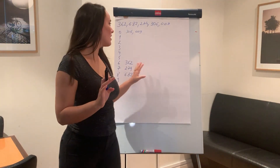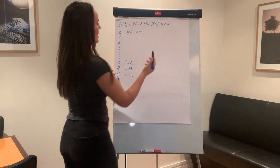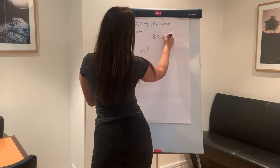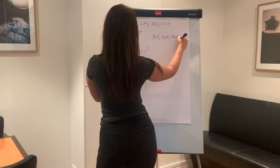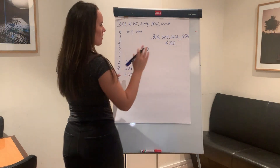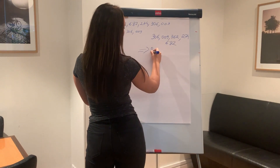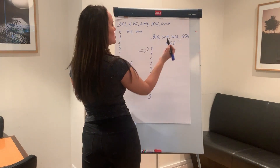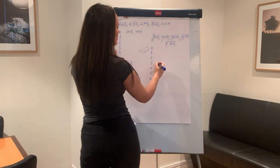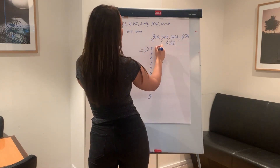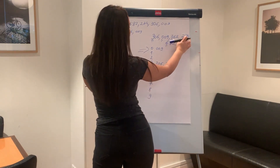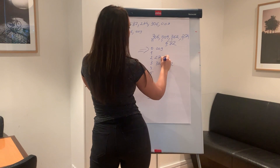We are almost done. We have this array and we need to rewrite the numbers: 306, 009, 362, 274, and 682. Now we need to rewrite the array one last time using the most significant digit. 306 goes under 3, 009 goes under 0, 362 goes under 3, 274 goes under 2, and 682 goes under 6.